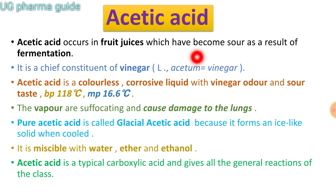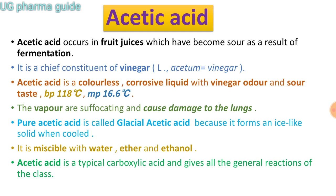और जो 'acetum' शब्द है, जिससे acetic acid बना है, वो एक Latin word है जिसका मतलब होता है vinegar. Acetic acid एक colorless liquid है, corrosive liquid है — मतलब यह बहुत जल्दी corrosion cause करता है — और इसका odor vinegar जैसा है, सिरका. इसका boiling point है 118 degree Celsius, और melting point 16.6 degree Celsius.